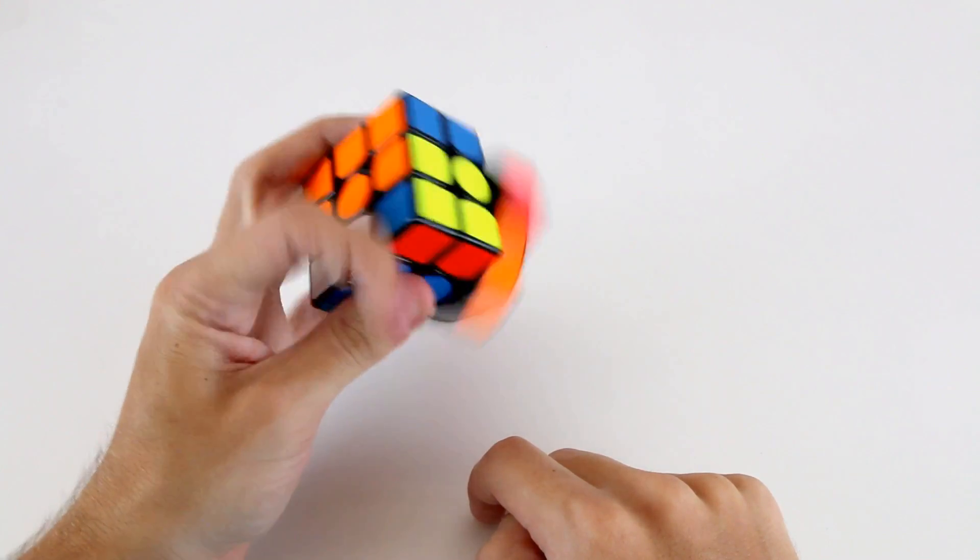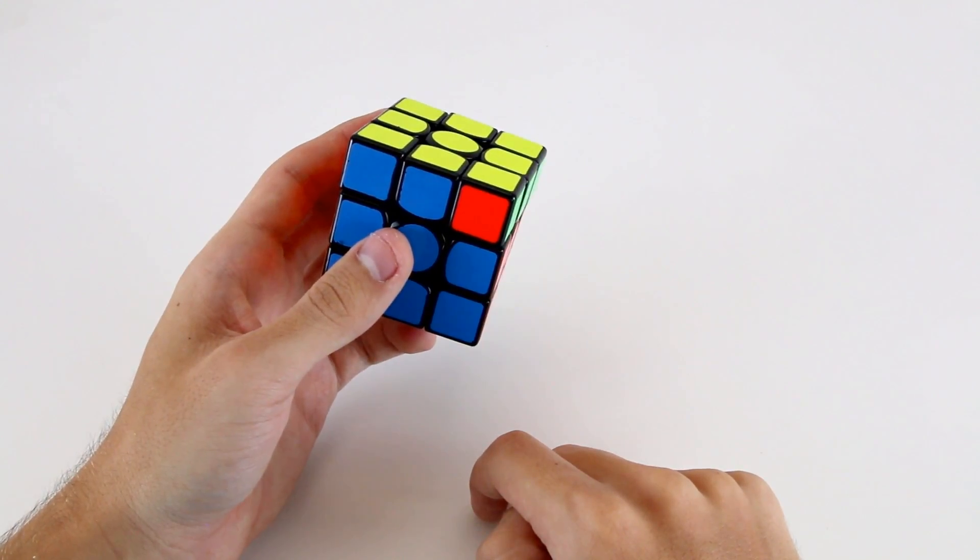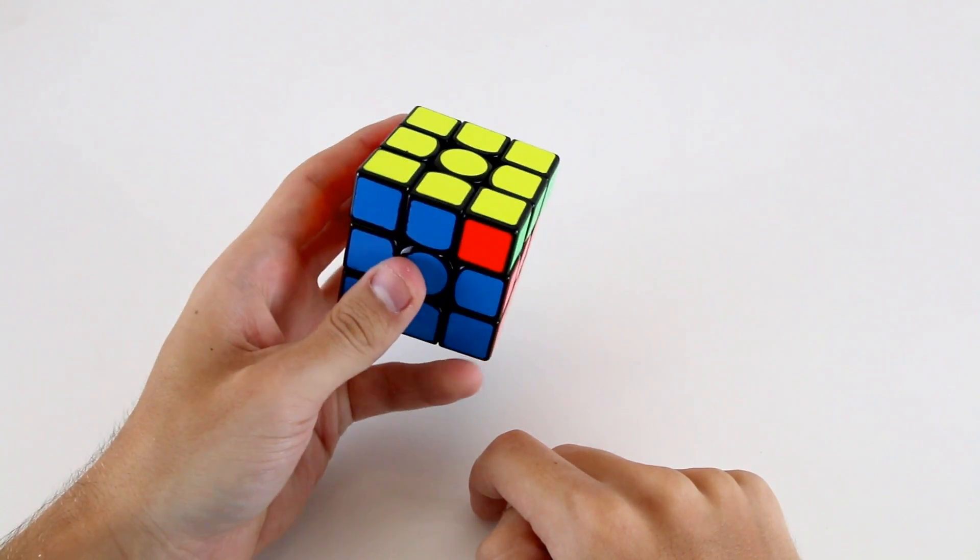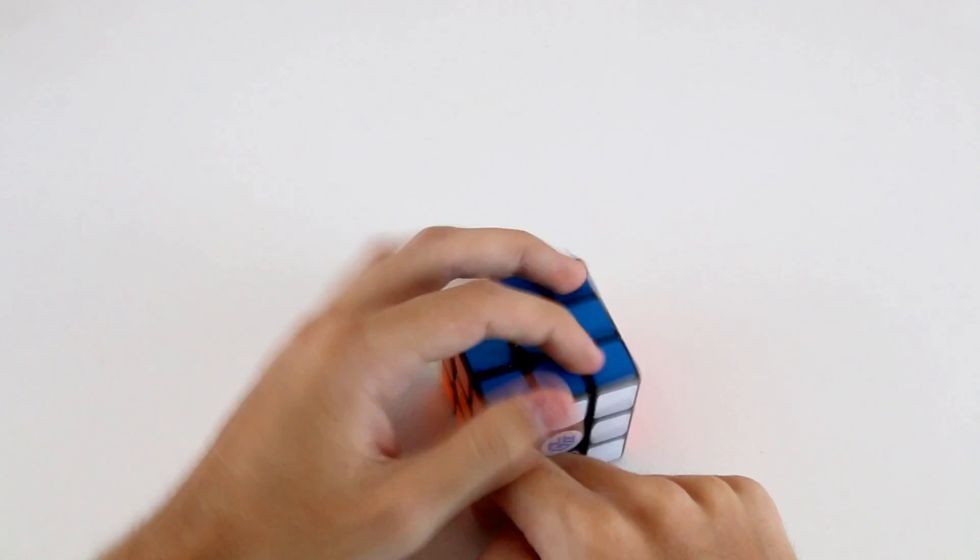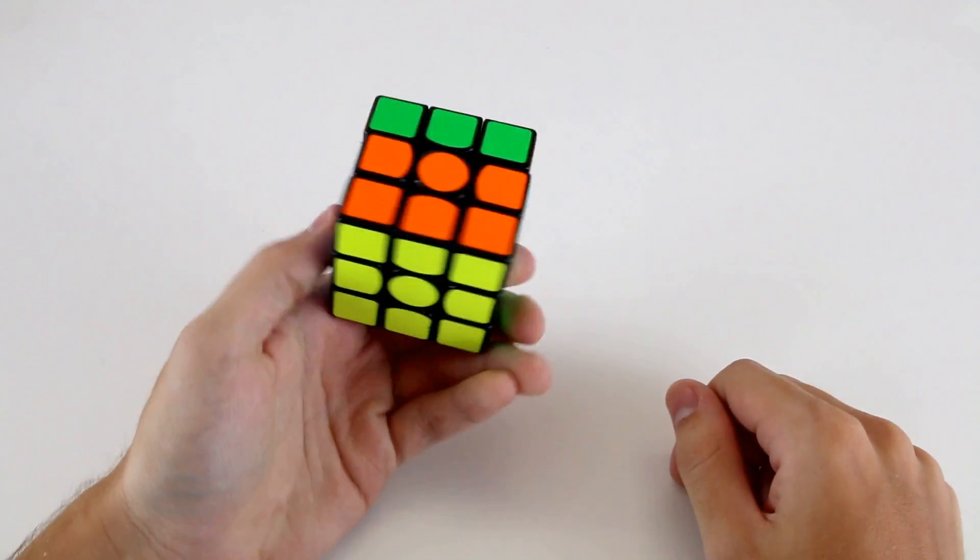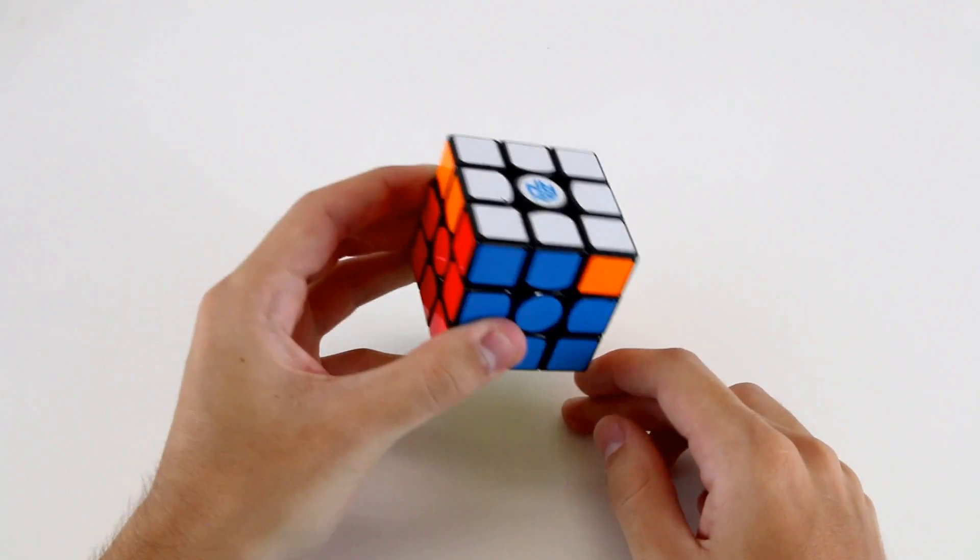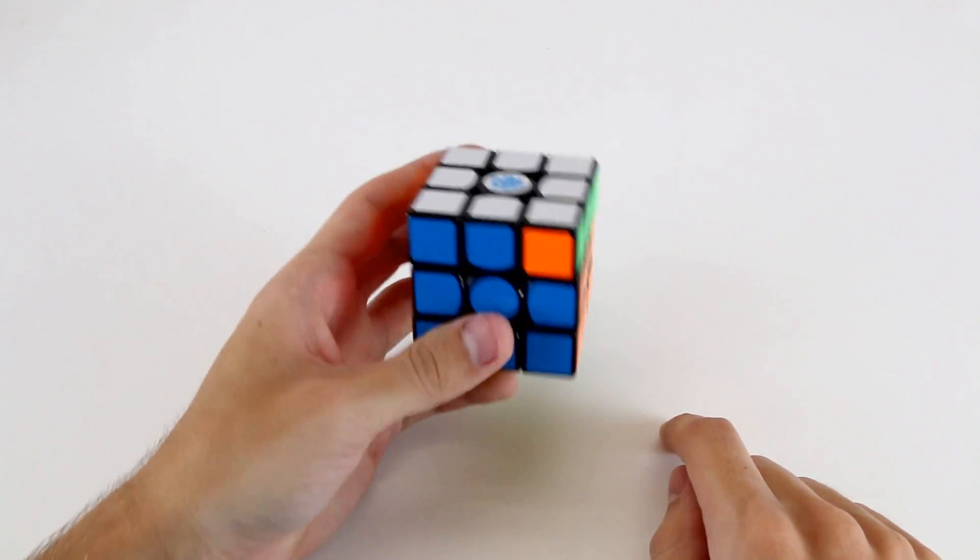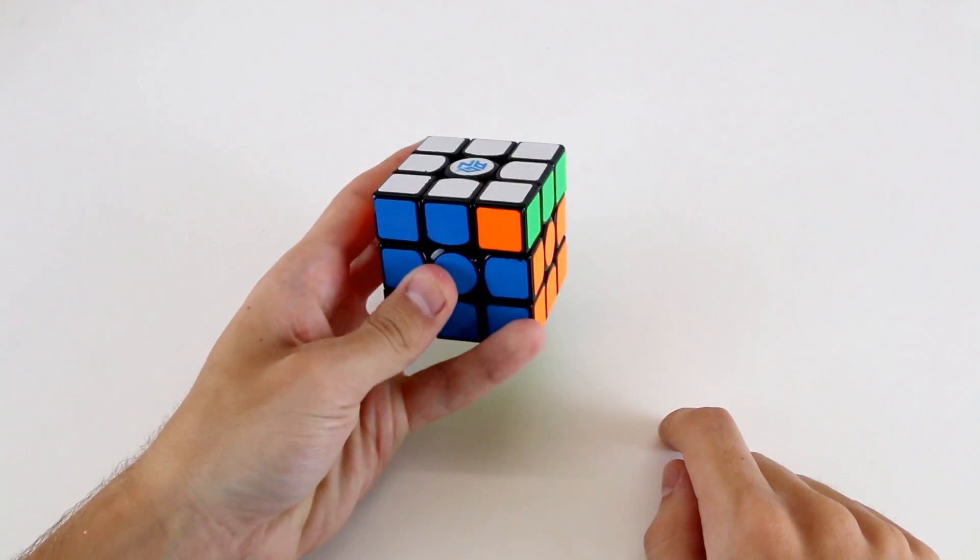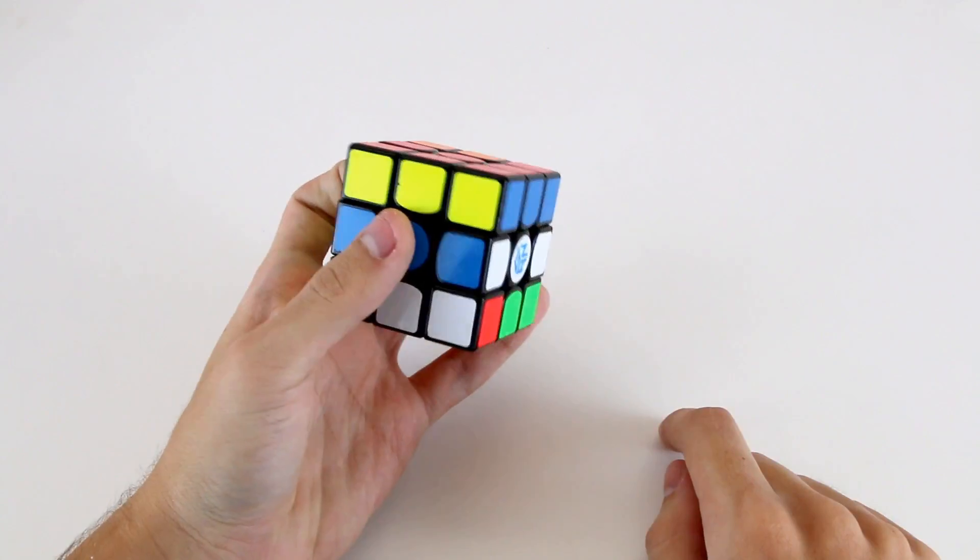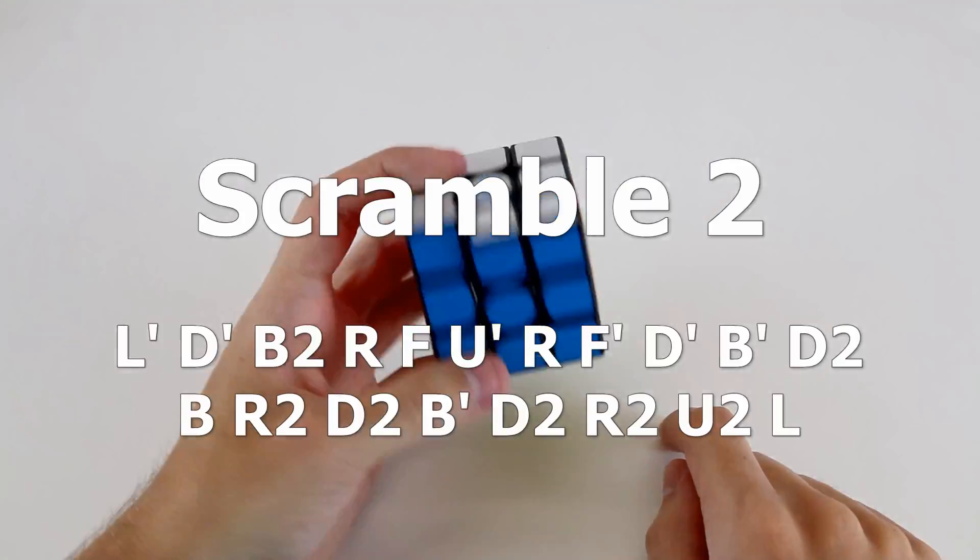Then I've got OLL and then PLL. Now let's see if I can get this right. Okay, I got that one. Just for reference, this is the algorithm that I did. This specific J permutation from this angle with this AUF, it's just a really nice variation of the standard 10 move J permutation. So it goes 1, 2, 3, 4, 5, 6, 7, 8, 9, 10, like that.